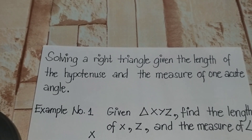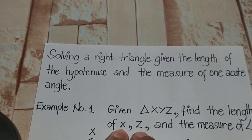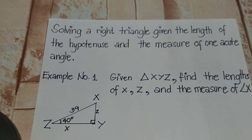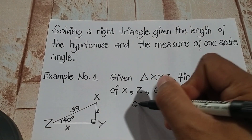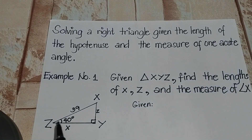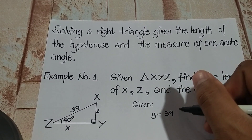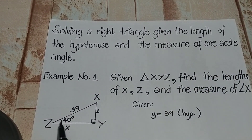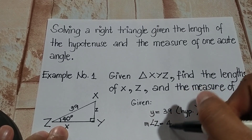For example number one, given triangle XYZ, find the length of side X, side Z, and the measure of angle X. Here is our illustration: triangle XYZ with angle Y as our right angle. From the given, the side opposite to our right angle is our hypotenuse, so side Y is equal to 39 units. We also have the measure of angle Z which is 40 degrees.